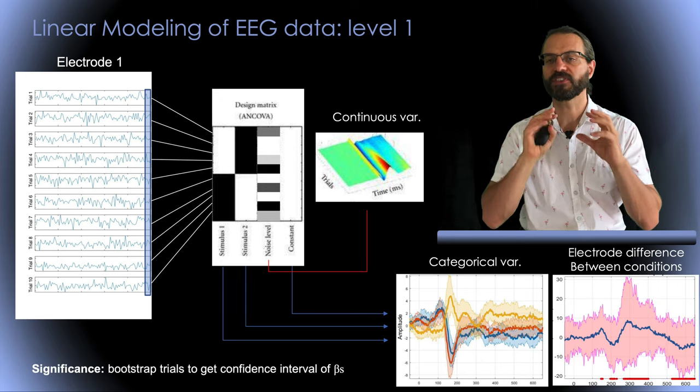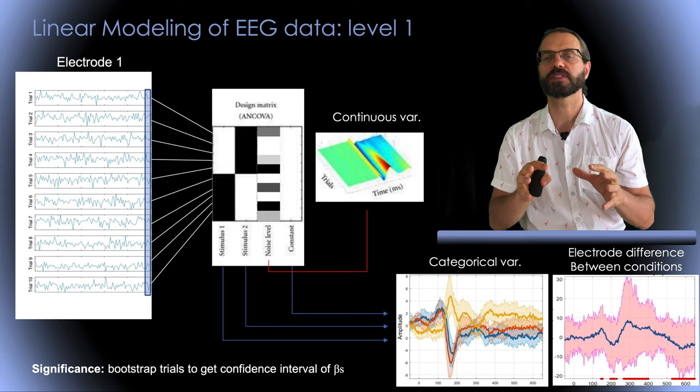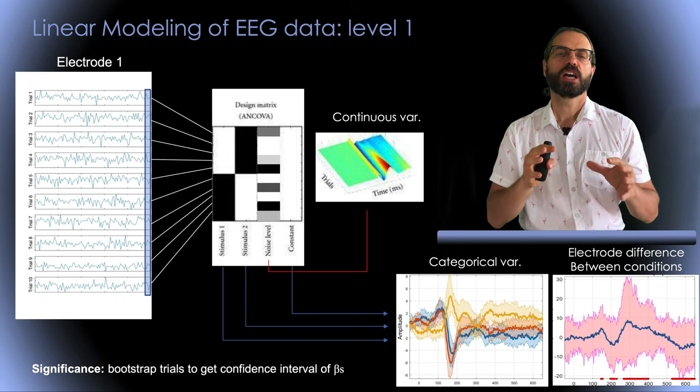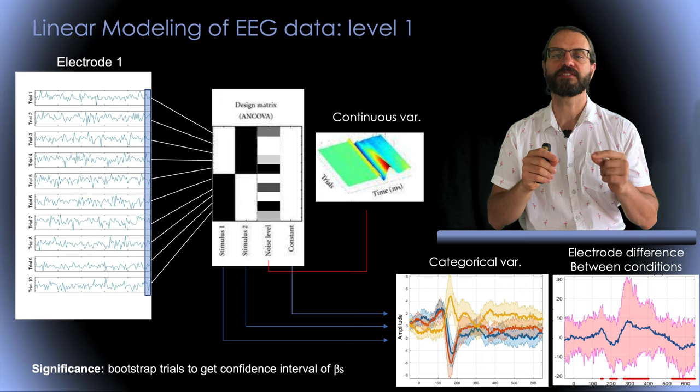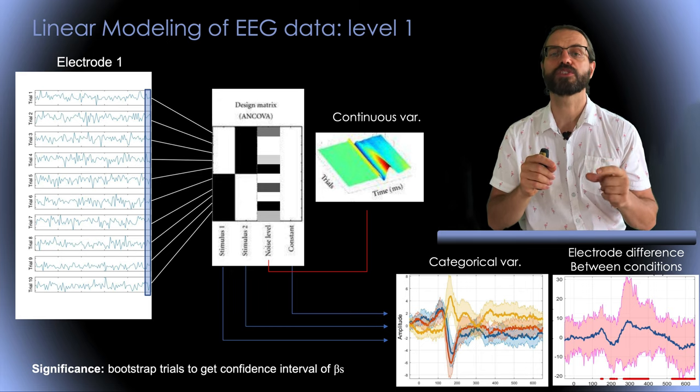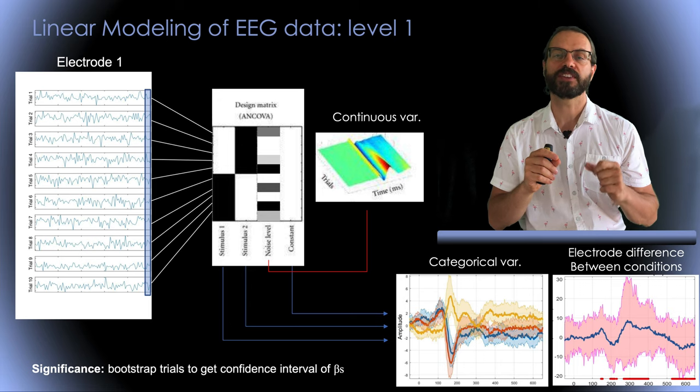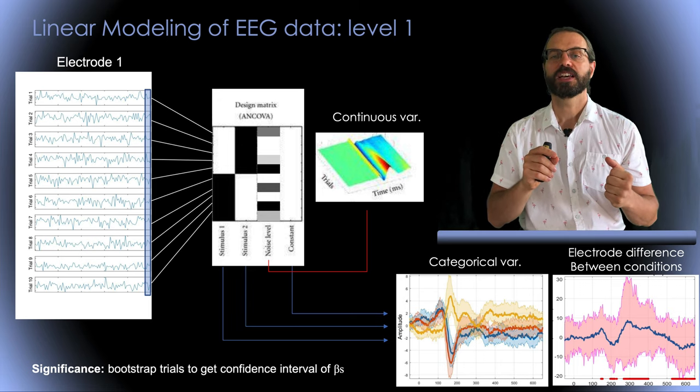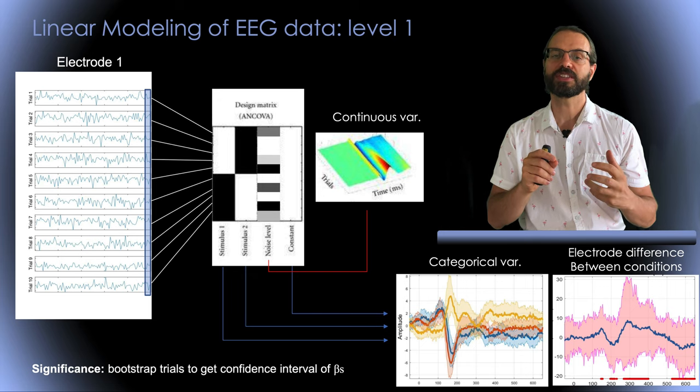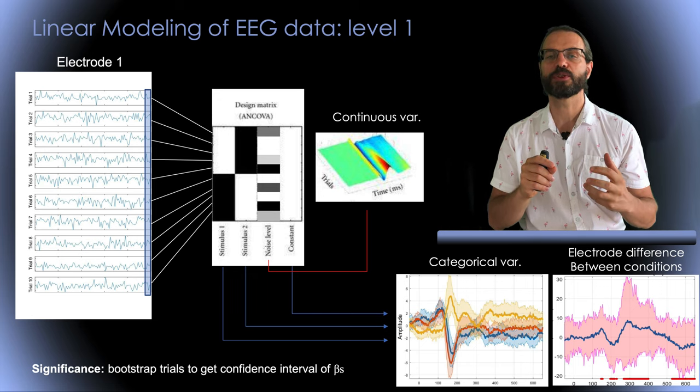To assess if we have a significant difference between types of images, we can also subtract the beta parameters and assess if the 95% confidence interval of the difference overlap with zero. If it does, the beta parameter is not significant.